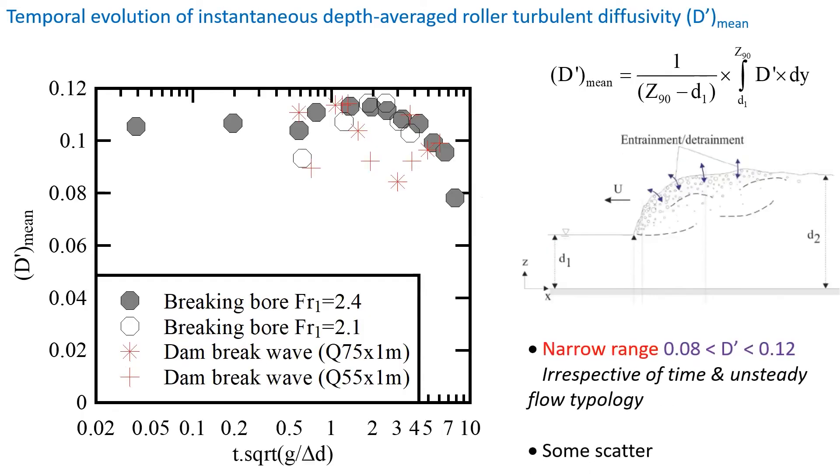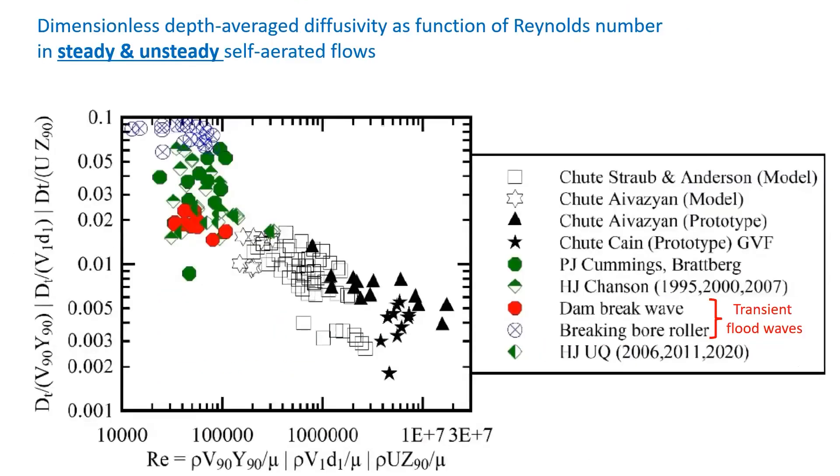We can also look at the temporal evolution of the instantaneous depth average turbulent diffusivity D' mean, with its definition on the top right. Experimental data shown on the graph show, despite some scatter, a relatively narrow range in dimensionless diffusivity, irrespective of time and flow typology.